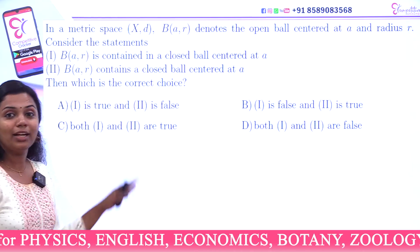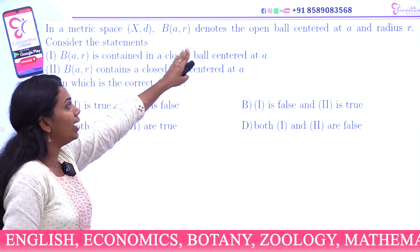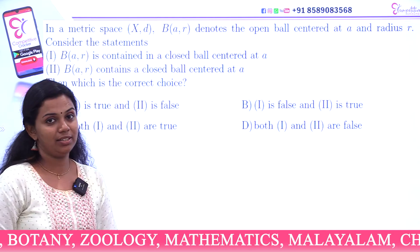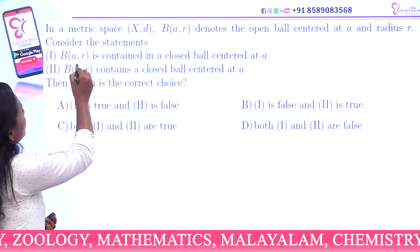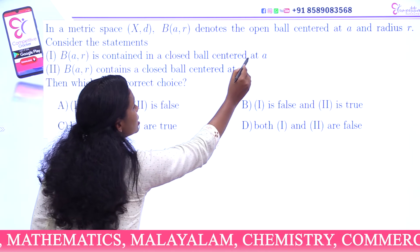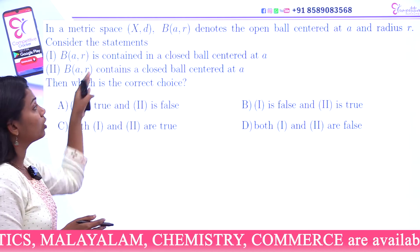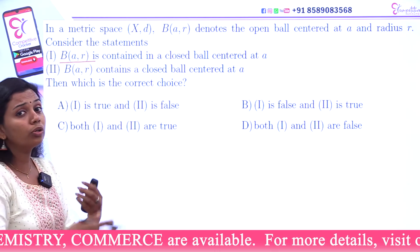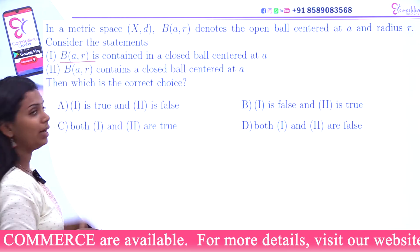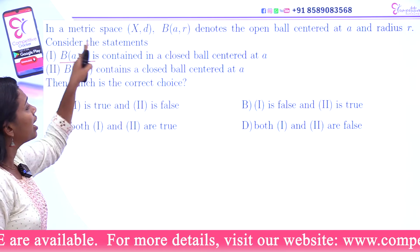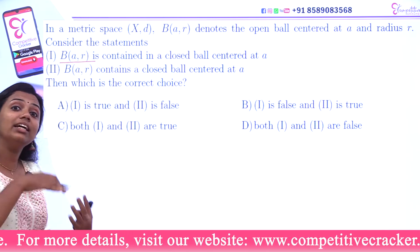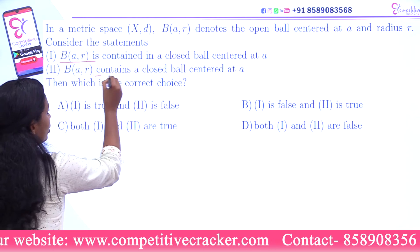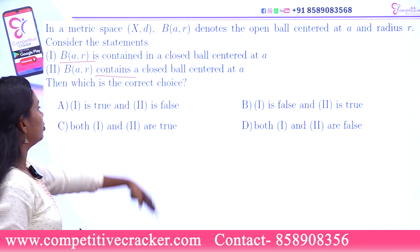Now a related question: In a metric space (X, d), B(a, r) denotes the open ball centered at a and radius r. Consider the statements. First statement: B(a, r) is contained in a closed ball centered at a. The open ball is contained in a closed ball. Which of the following choices is correct?